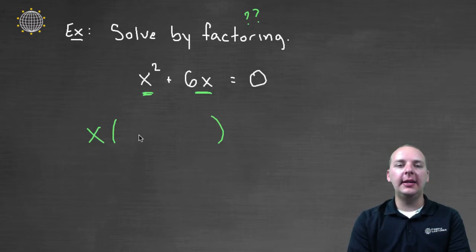Then we'll think, what would I need here so that if you multiplied it by x, you would get x²? Well, that would be an x. And what would you need here so that if you multiplied it by x, you would get 6x? Obviously that would be a 6. So we'd have x times (x + 6).